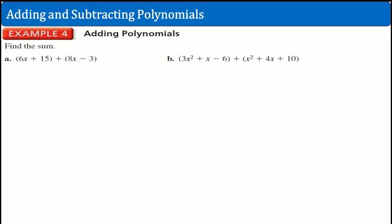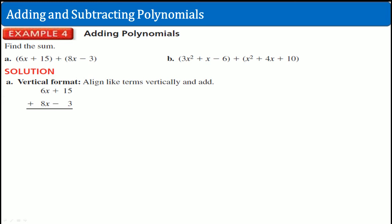Let's do some examples. We have (a): 6x plus 15 plus 8x minus 3. This is called the vertical format. You write the first expression, which is 6x plus 15, then below it you write the second expression, 8x minus 3. Now you just add them. 15 minus 3 is 12, and 6x plus 8x becomes 14x. So this is called vertical — it just comes straight down. Very straightforward.